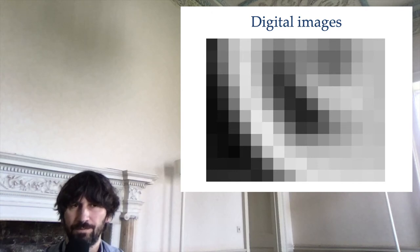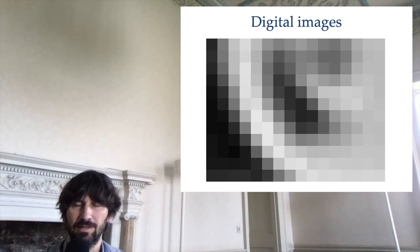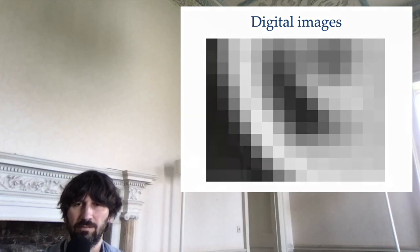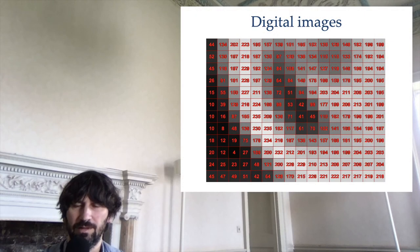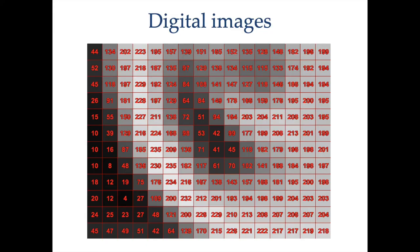When we look at how these pixels are stored in the memory of a computer, we can see that each pixel is associated with a number ranging from 0 to 255. This is not the case for all images, but in general this is the case for most images.